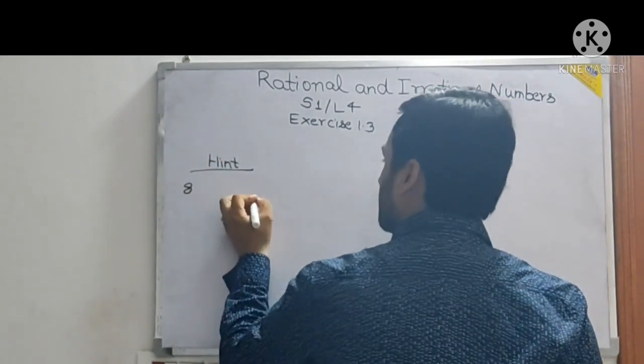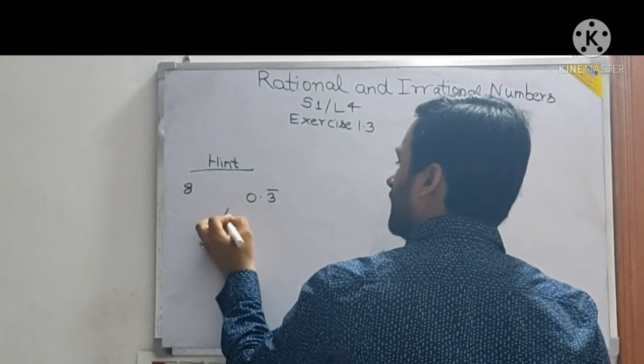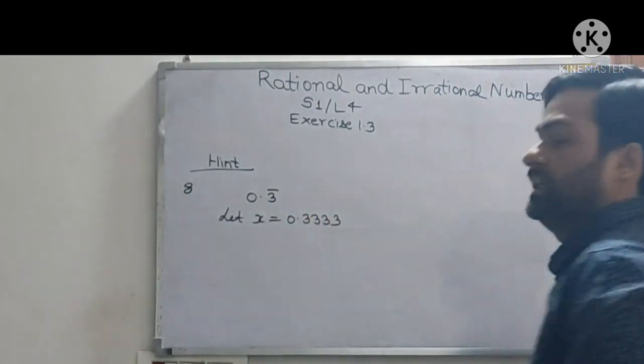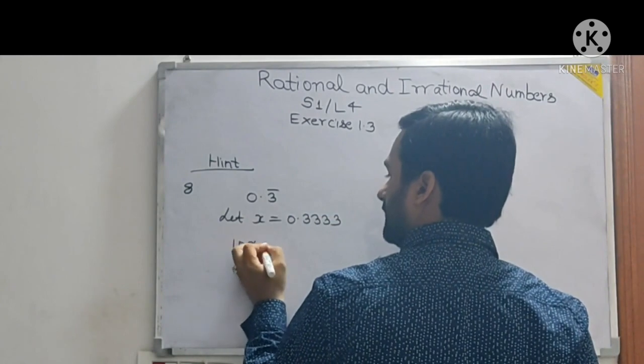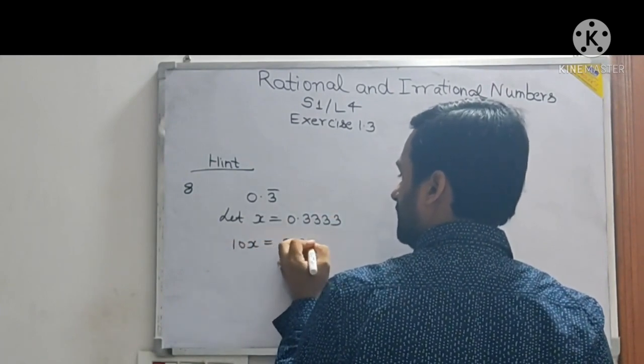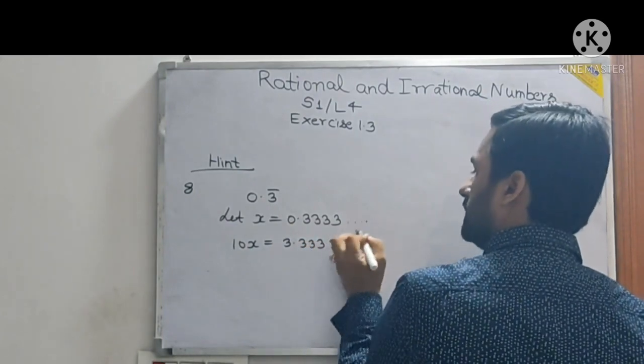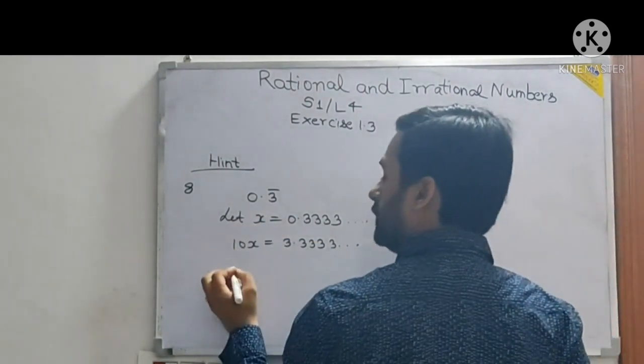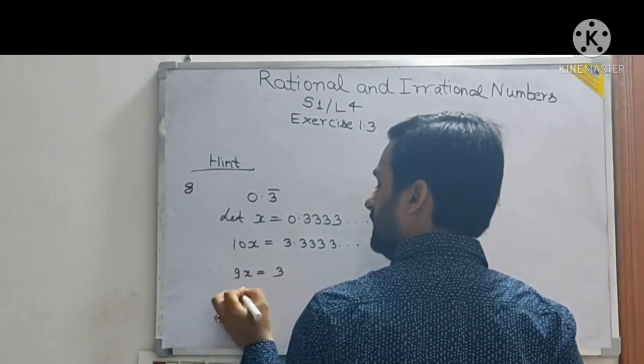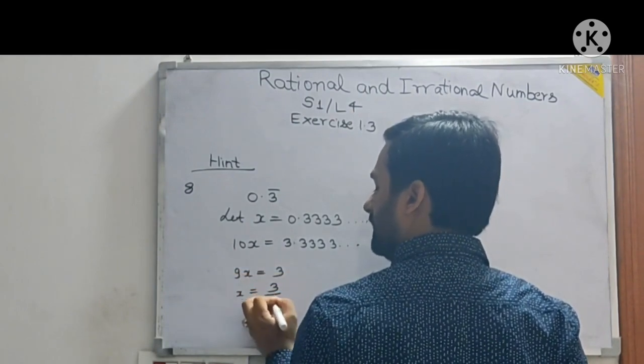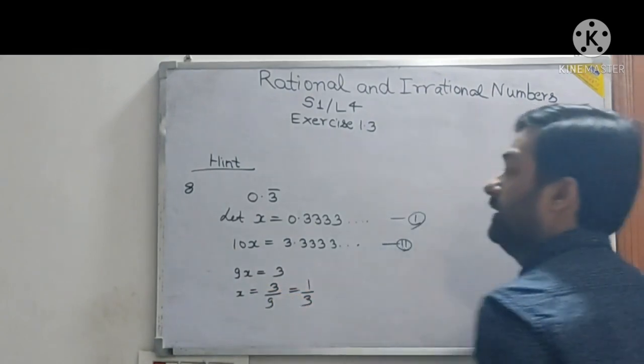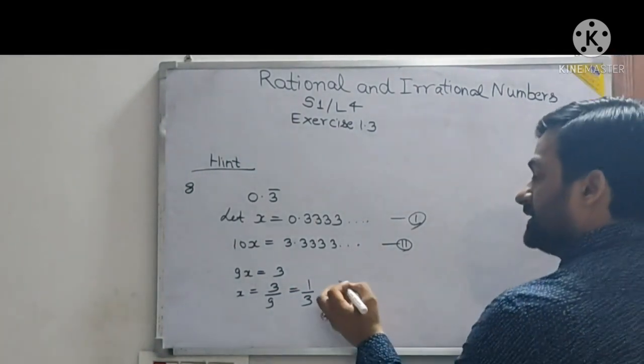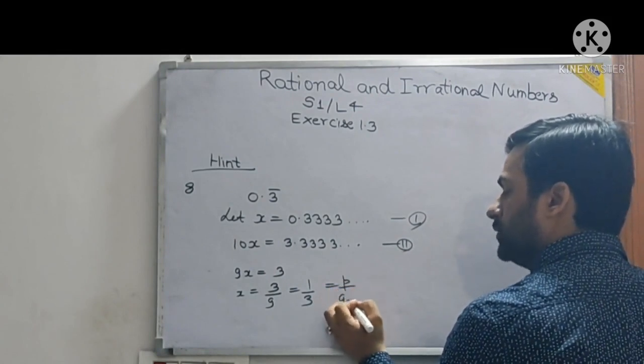Now eighth question is something new. I will give the hint for it. See what you got? 0.3 bar. That means you write, let x equal to 0.3333. Then multiplying both sides by 10, what will happen? 10x equal to 3.3333 and so on. This is equation 1. This equation 2. Subtracting 2 from 1, so 9x will be 3. x equal to 3 by 9. So 1 by 3.